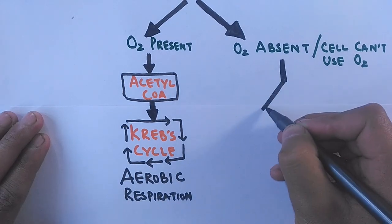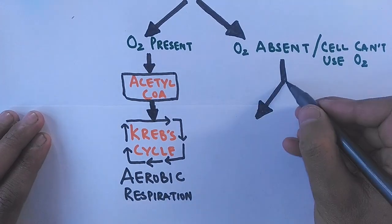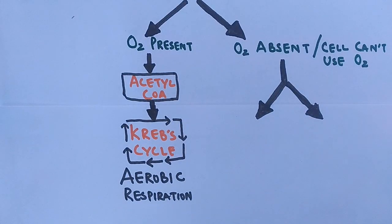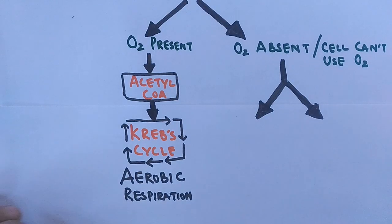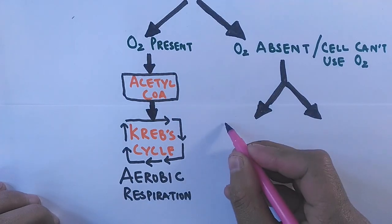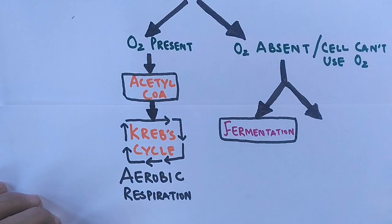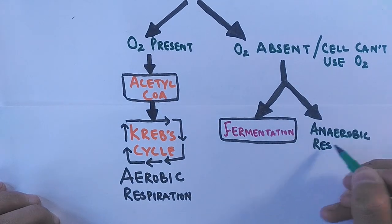The other fate of the pyruvate molecule occurs when the cell is deprived of oxygen or cannot make use of oxygen. Here the pyruvate takes one of two paths: either it enters a process called fermentation, or it goes through anaerobic respiration.